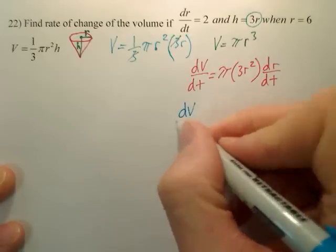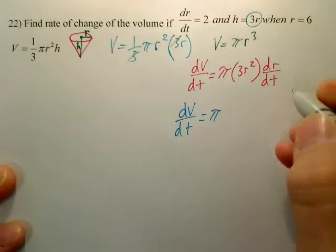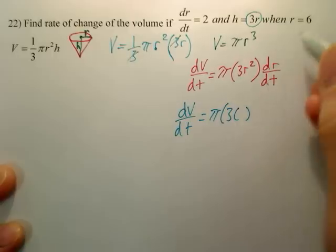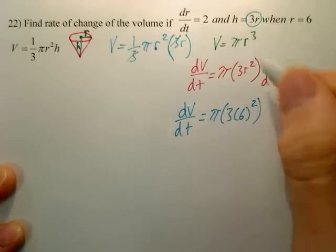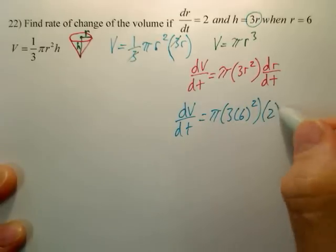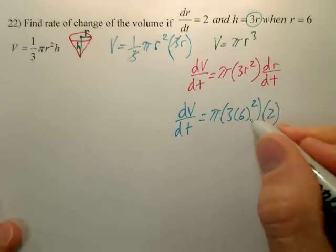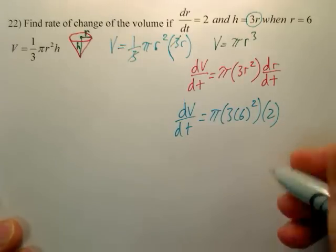So dV/dt is equal to pi, or pi times 3 times, what's the radius? The radius they have is 6, and dr/dt they said is 2. That would be your answer.